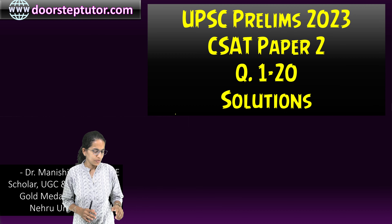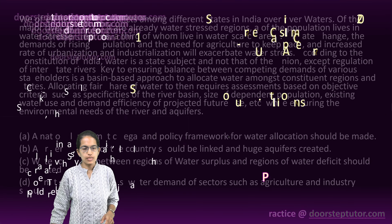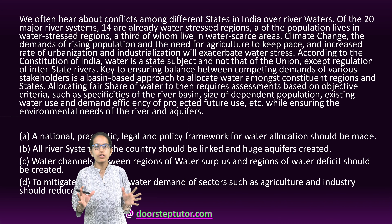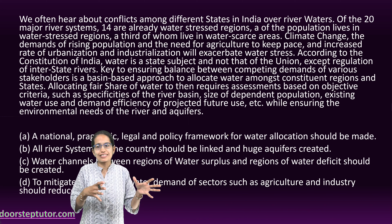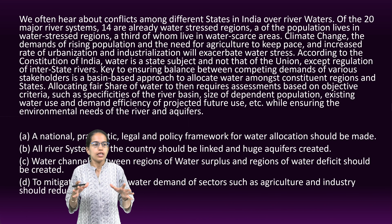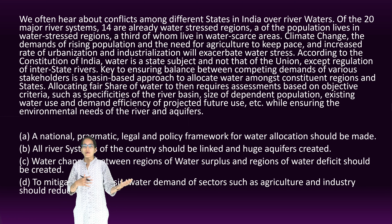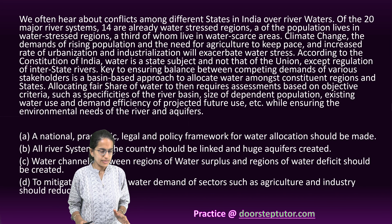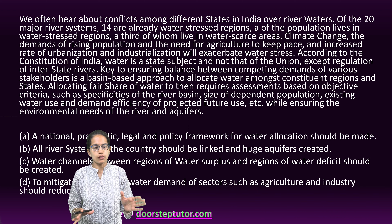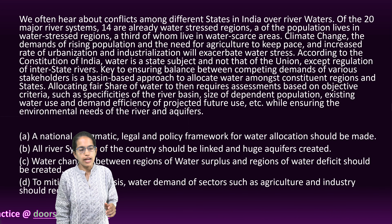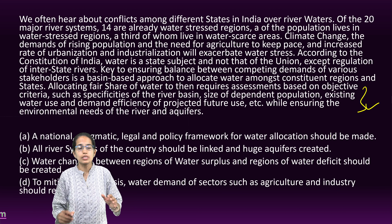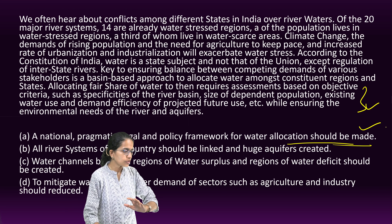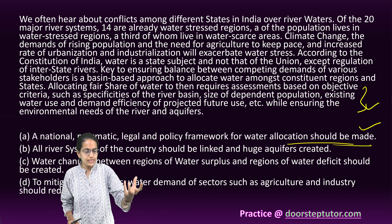Let's solve the first 20 questions from the CSET paper 2. Let's begin with the very first question. This question is a passage-based question. It talks about the conflicts among the various states over water — water disputes, water stress regions and the scarcity of water. Climate change has caused more demand based on population, agriculture, and industrialization, and there is a constant need to balance this out. Considering that, fact allocation is a very important aspect, and ensuring a proper framework for allocation should be made. Therefore, A becomes the right option.